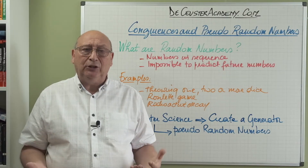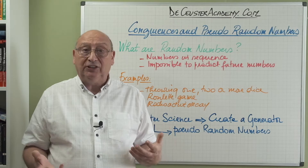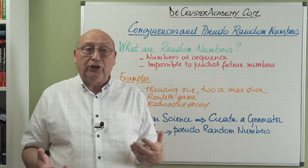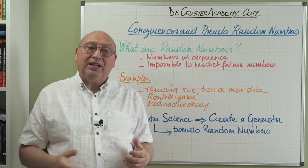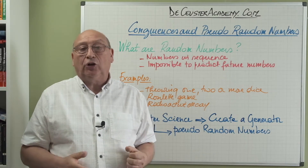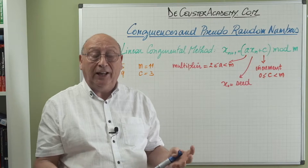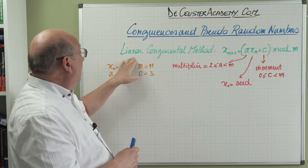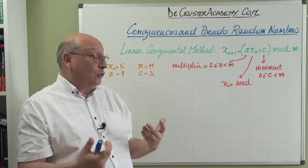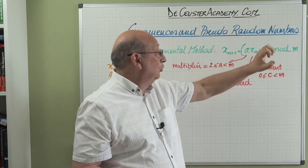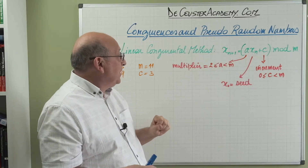Random generators are typically used in programs and simulations, for example Monte Carlo simulation. Let's look at how we can create pseudo-random numbers using what's called the linear congruential method — basically using the linear equation: x_(n+1) = (a·x_n + c) modulus m to calculate the next pseudo-random number.